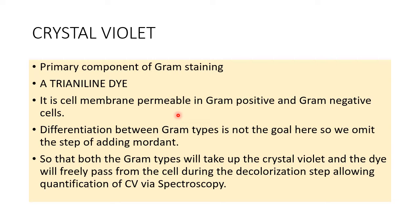In gram negative cells, the complex breaks out through the thin membrane and gets washed off during the decolorization step. In the Crystal Violet Biofilm Assay, we omit the step of adding mordant because the main aim is not to differentiate between gram types. So both gram positive and gram negative bacteria take up the dye, no crystal violet-iodine complex forms, and the dye freely passes from the cell during decolorization, allowing quantification via spectroscopy.